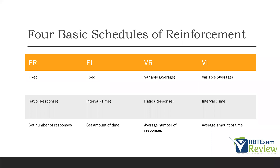What are the four basic schedules of reinforcement? When we talk about basic schedules, we're talking about very simple ways of delivering reinforcement to your clients. These basic schedules are going to guide your treatment plans as an RBT. All we mean when we say schedules is just telling you when reinforcement should be delivered — depending on responses or time. You have FR, FI, VR, and VI.